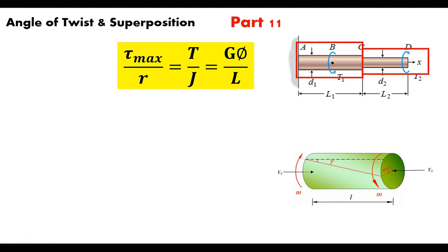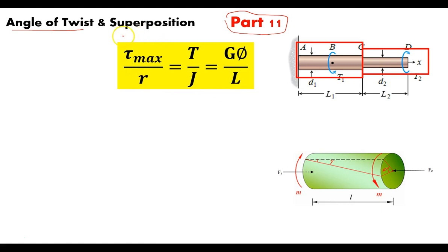Hi, this is Professor Cummings and this is Part 12 of the playlist for angular deformation in Strength of Materials. It's going to cover angular deformation, or angle of twist. As a review from Part 11, we went over both the general torsion formula and the angle of twist, and we also saw how angle of twist applied to superposition.